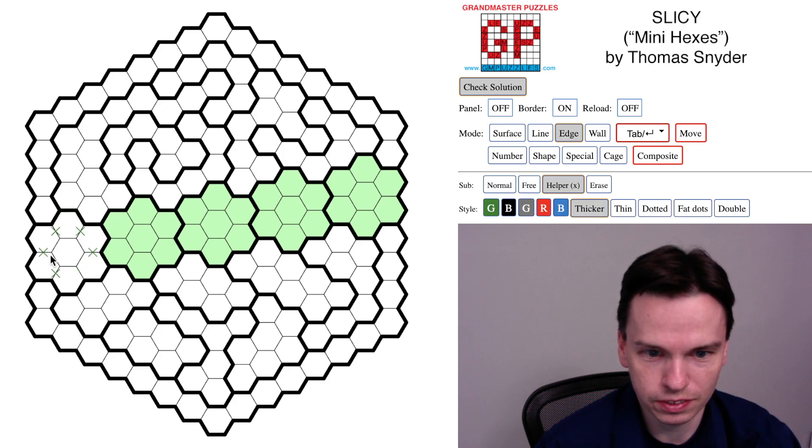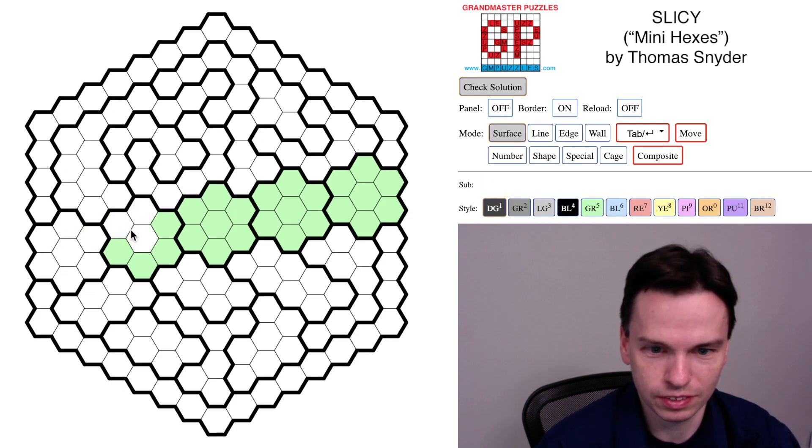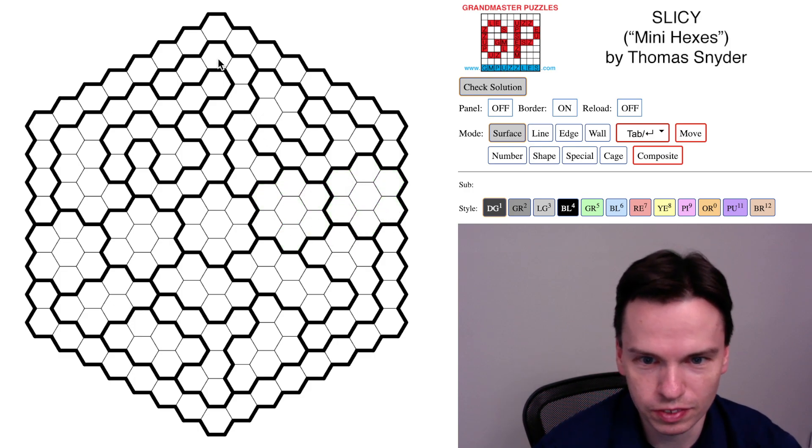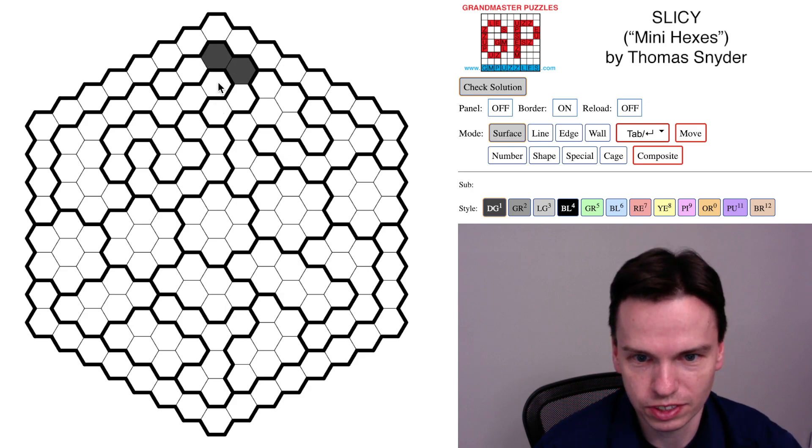One thing to note eventually in the solve, maybe not the very start, is that pattern of shaded cells which gives C's or Y's in the mini hex shapes. My guess though is most solvers started from these smaller regions at the top. Like this region with six cells always has to shade these middle two.